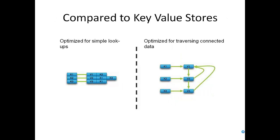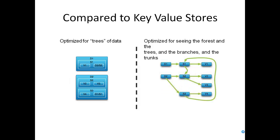If you look at the key-value store, it is optimized for simple lookups, but graph databases are optimized for traversing connected data. For example, document stores are optimized for trees of data, whereas graph databases are optimized for seeing the forest, the tree, the branches, and the trunks.